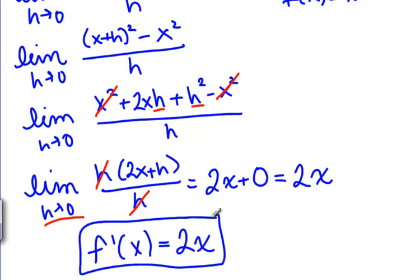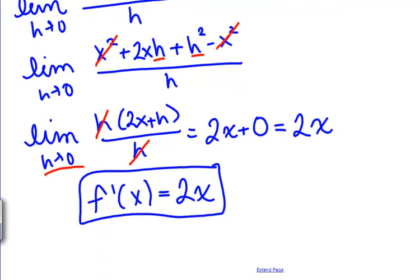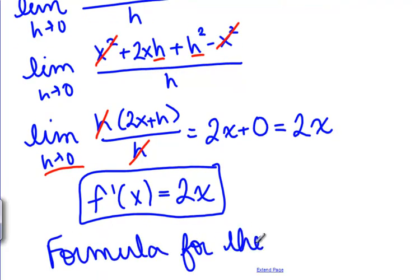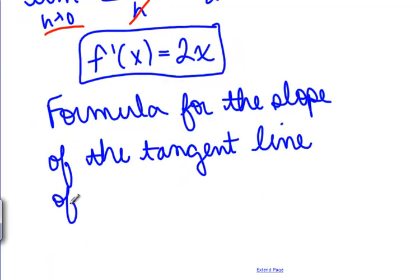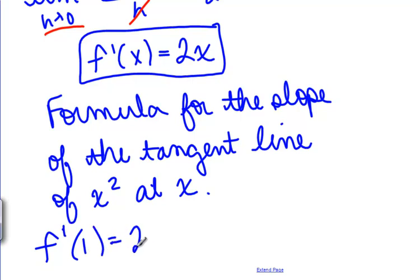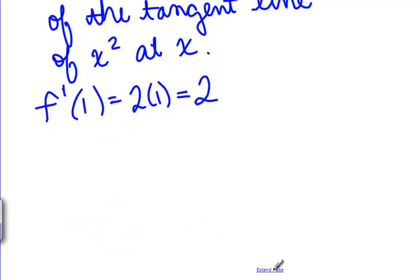This means that 2x is a formula for the slope of the tangent line of x squared at x. So if we want to know f prime of 1 like we found before, plug 1 into this formula, 2 times 1 gives us 2. That's what we found before using the long way.